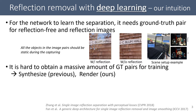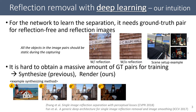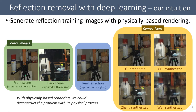Since single image reflection removal is a highly ill-posed problem, many learning-based reflection remover methods have been proposed. For the network to learn the separation, it needs ground-truth pairs for reflection-free and reflection images. Because it is hard to capture a massive amount of real-world reflection image pairs, most learning-based methods synthesize random two images without physics, like in this procedure.